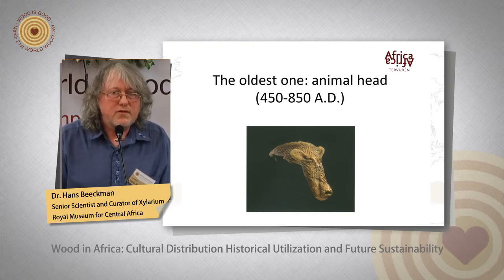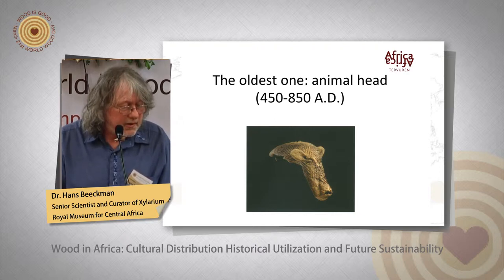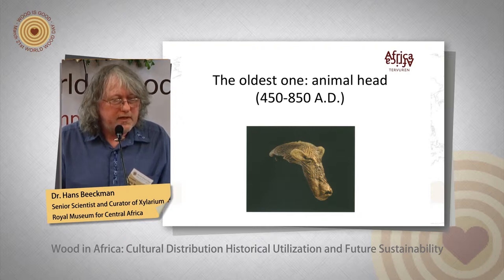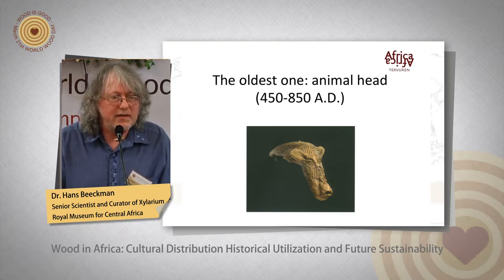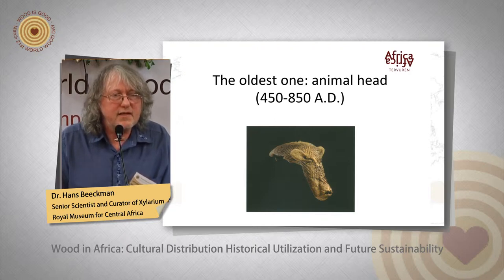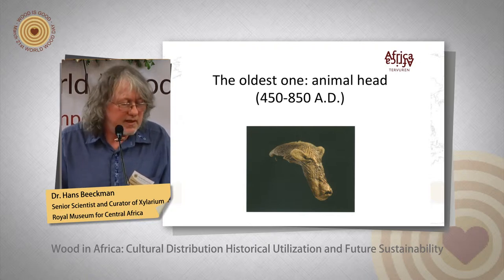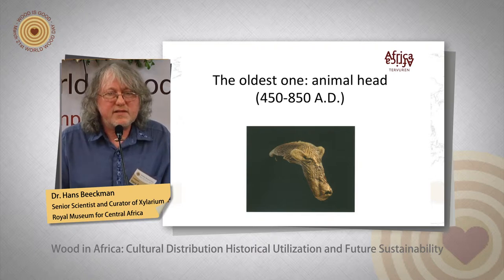The very oldest sculpture in Central Africa has been found in Angola and dated by radiocarbon to around the 8th century. It was found by luck while digging a well for prospective mining. There is no information on the function of this sculpture, and also no precise information on what it represents exactly. It might be what they call an aardvark — a kind of wild boar but smaller — and it might have been used as a kind of headdress during rituals.